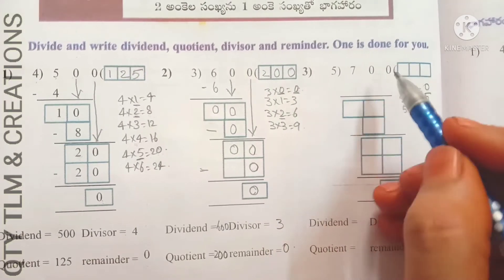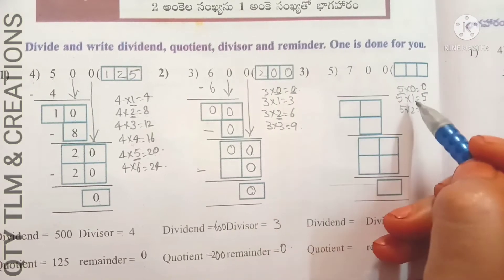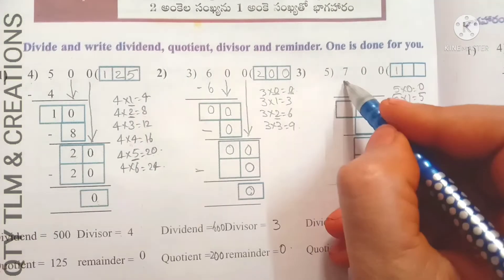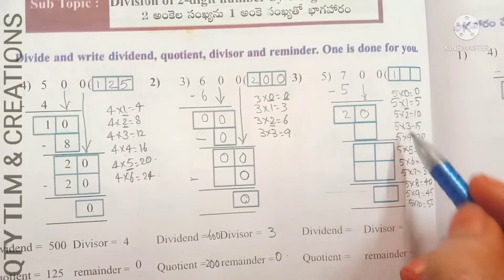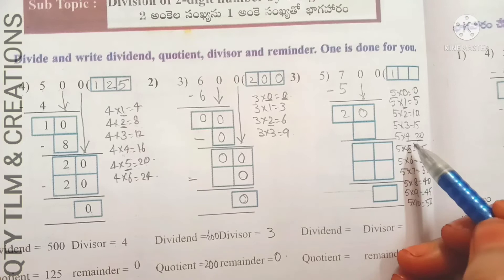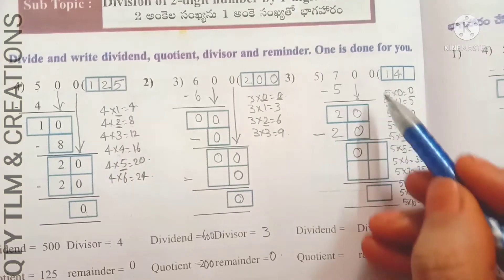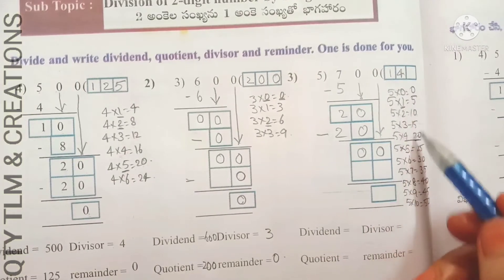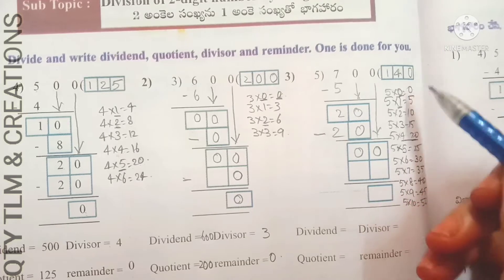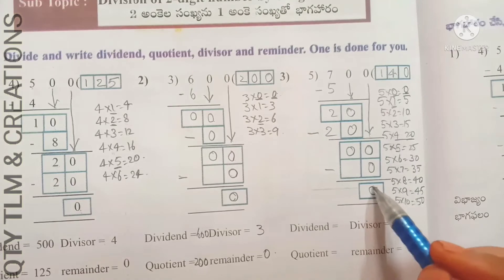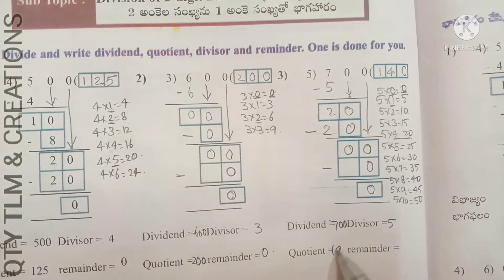Next: 700 divided by 5. Division starts from the highest place value, which is 7. 5 divides 7 for 1 time — 5 ones are 5. Write 1 in the quotient's place and 5 under 7, subtract: we get 2. Bring down 0; it becomes 20. 5 fours are 20. Write 4 in the tens place of the quotient and 20 under 20, subtract: we get 0. Bring down 0 from ones; write 0 in the ones place. Dividend is 700, divisor is 5, quotient is 140, remainder is 0.